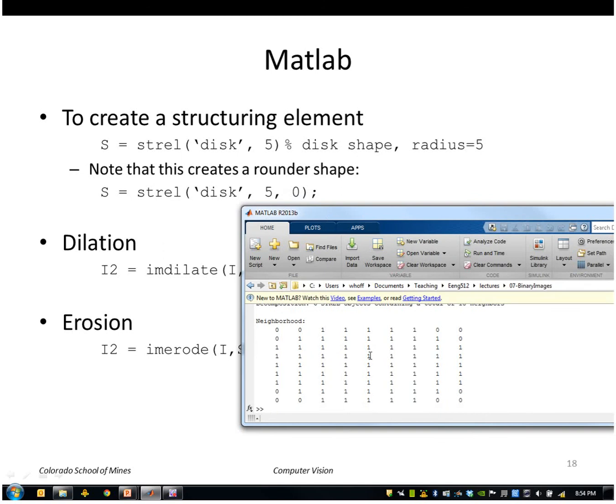If you want a rounder shape because this doesn't look very round to me you can use this option 0 here and this more approximates the shape of the disk.